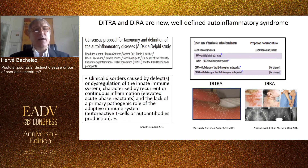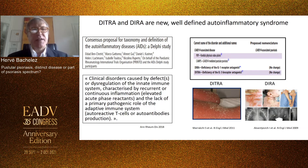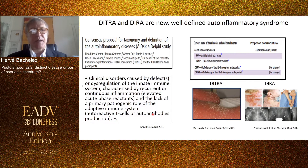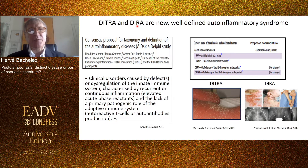We can say that, for the deficiency in IL-36 receptor antagonist — and widely for GPP — this is a new auto-inflammatory syndrome, meaning a clinical disorder resulting from deregulation of the innate immune system primarily rather than the adaptive immune system. Even though the TH17 cascade is enhanced in these patients, it's not primarily pathogenic. A neighboring disease called deficiency in IL-1 receptor antagonist was pioneeringly identified by Daniel Kastner's group at the NIH, with bone abnormalities.